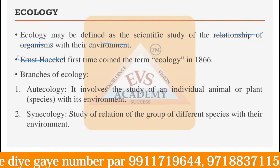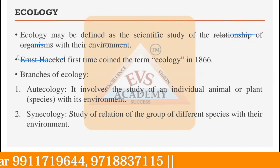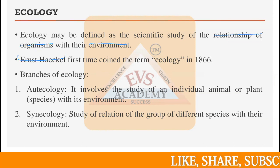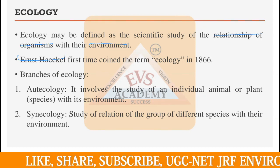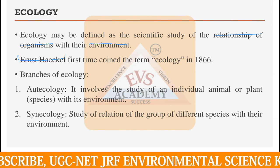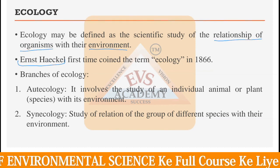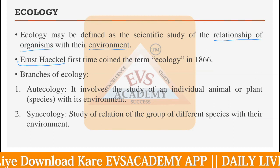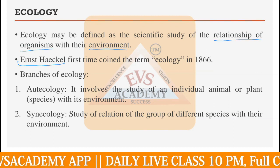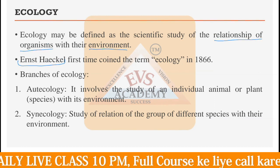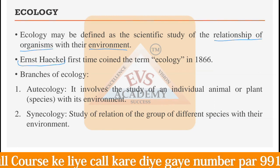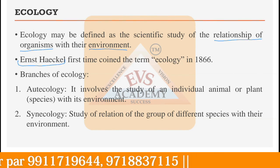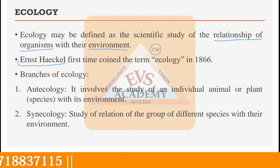Ecology is divided into two main branches. One is called Autecology and another is called Synecology. Autecology involves the study of an individual animal or plant species with its environment. Synecology is the study of the relation of a group of different species with their environment. You can remember this by the singular and plural concept — Autecology is for a single individual, while Synecology is for multiple species.